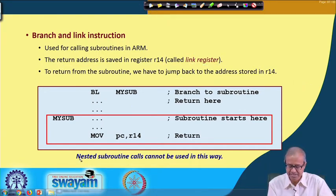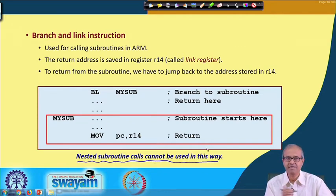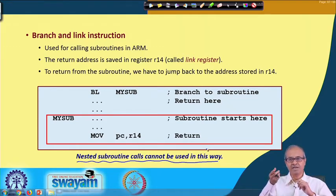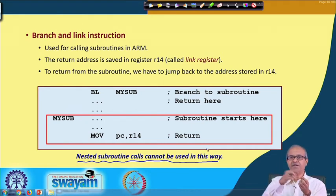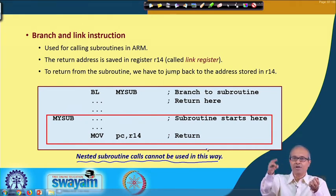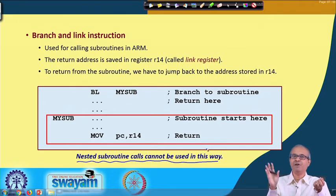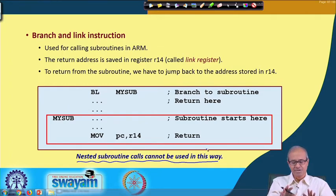However, in this way you cannot implement nested subroutine calls or recursion. If you are calling subroutine A, A calling subroutine B, and B calling subroutine C — you have only one register R14 to store the return address. When A calls B, A's return address gets stored in R14 again, overwriting the previous R14 value. So you will never be able to return to your original program. Nested subroutine calls will not work this way; you have to use some other mechanism.